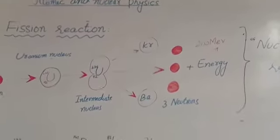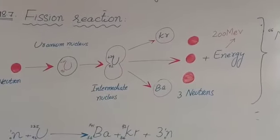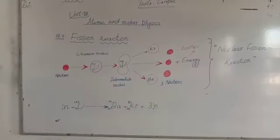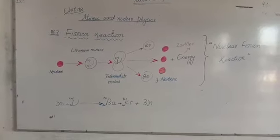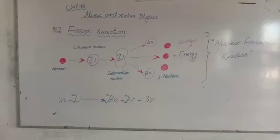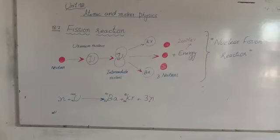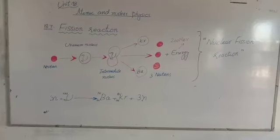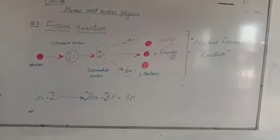The uranium nucleus splits into two nearly equal fragments after absorbing a slow-moving neutron, and that process also results in the production of typically two or three neutrons per fission event.